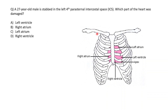First, always have the midclavicular line handy and label the ribs, then see where the stab occurred. According to the question, it was on the left side — parasternal, meaning beside the sternum — in the fourth intercostal space, close to the sternum. Remembering our anterior view, the right ventricle comprised most of the anterior border and was closest to the sternum, so the most likely answer is the right ventricle.